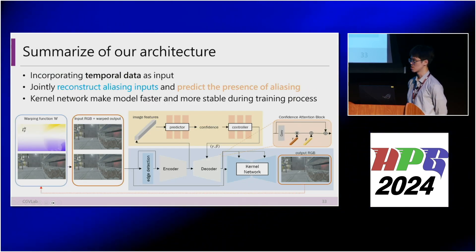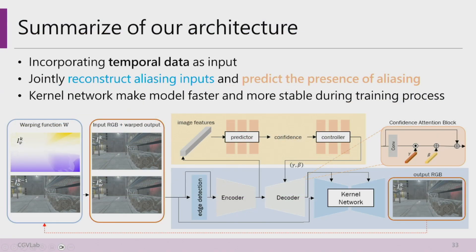To summarize our architecture: first, we incorporate temporal information through the motion factor. Second, our model performs multi-task learning — the reconstruction branch enhances the prediction branch through image-based supervision. Third, we use the kernel network to make the training process faster and more stable.